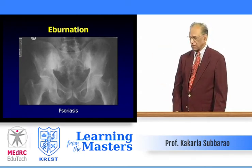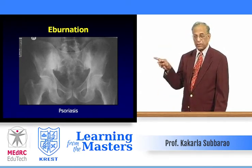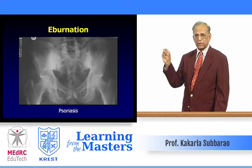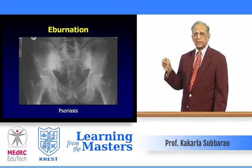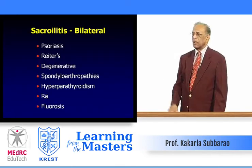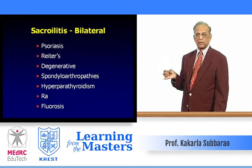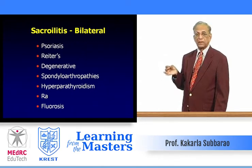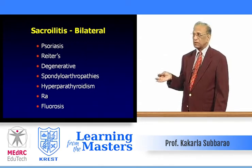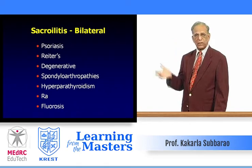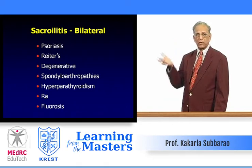Psoriasis: another example of the combination of erosions and reactive sclerosis — bilateral but not necessarily symmetrical, mostly reactive sclerosis. In the pubic symphysis some reactive sclerosis is present but the articular surfaces are still regular. Bilateral sacroiliitis can occur in psoriasis and Reiter's syndrome. Spondyloarthropathies include ankylosing spondylitis and related conditions.